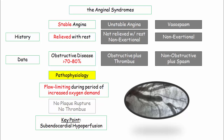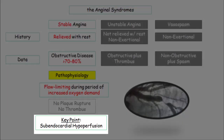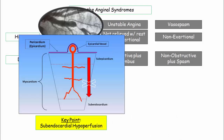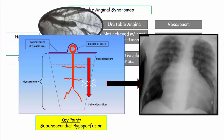Viewing a graphic with a tight proximal LAD stenosis makes it easy to envision the concept of flow limitation. Since stenoses are located in the epicardial vessels, the point most distant from that occlusion is the subendocardium. Flow from the epicardial vessels deep into the subendocardium becomes compromised in obstructive coronary disease. One of the potential complications of chronic hypoperfusion is impairment of LV function, represented by cardiomegaly on chest x-ray.